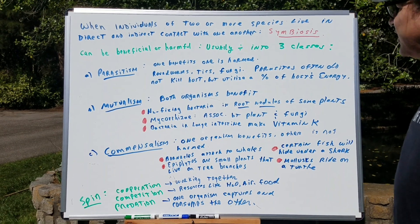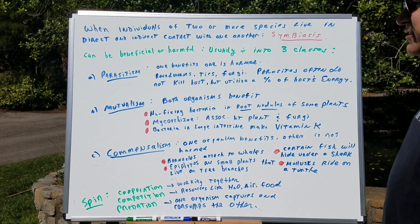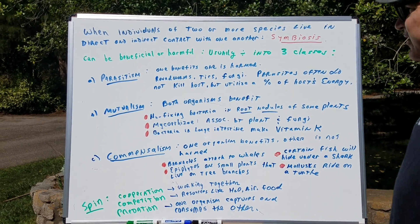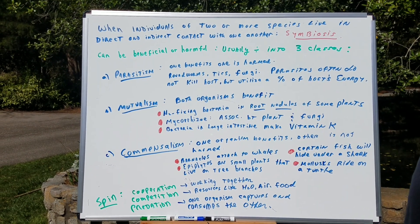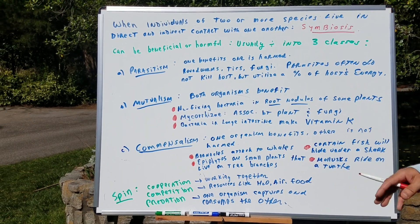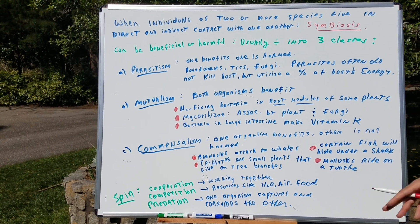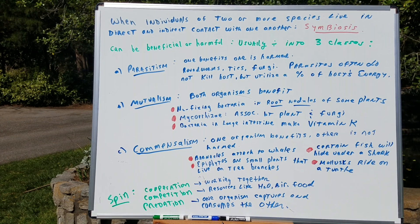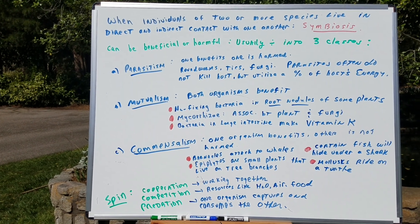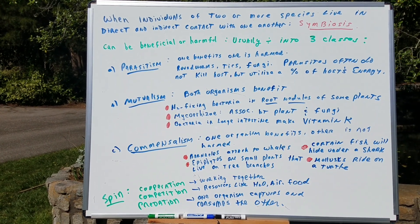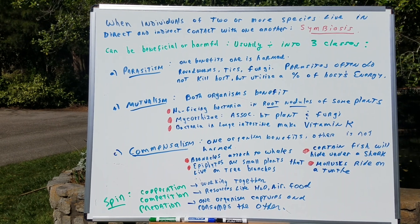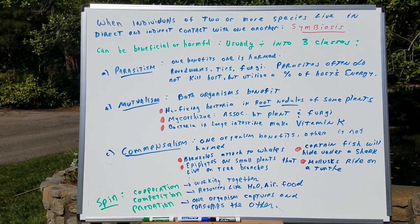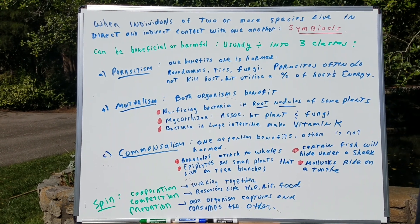Usually, scientists divide it into three classes: parasitism, mutualism, and commensalism. In parasitism, one organism is going to benefit and the other will be harmed. For instance, roundworms infecting an organism, ticks, fungi — athlete's foot could harm an organism, but not necessarily kill it. Parasites often don't kill a host, but utilize a percent of the host's energy.